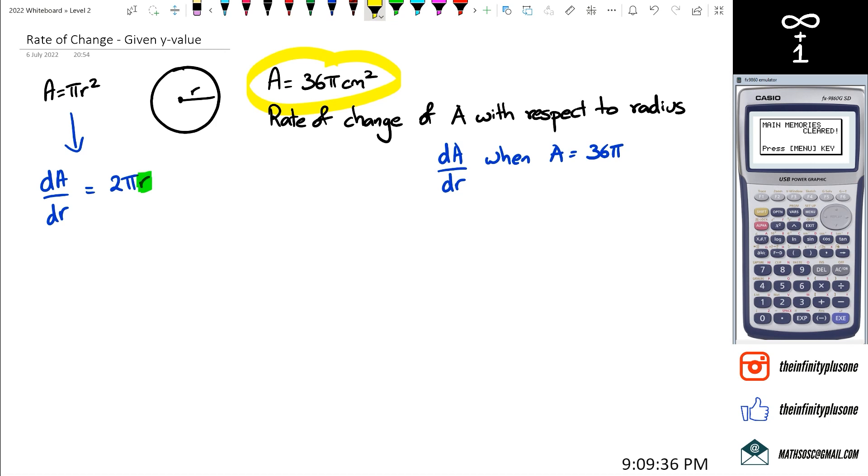But however, what we have, we don't actually have r, we only have A which equals 36 pi. So what we then need to do is we need to actually figure out what the radius is when area is equal to 36 pi.